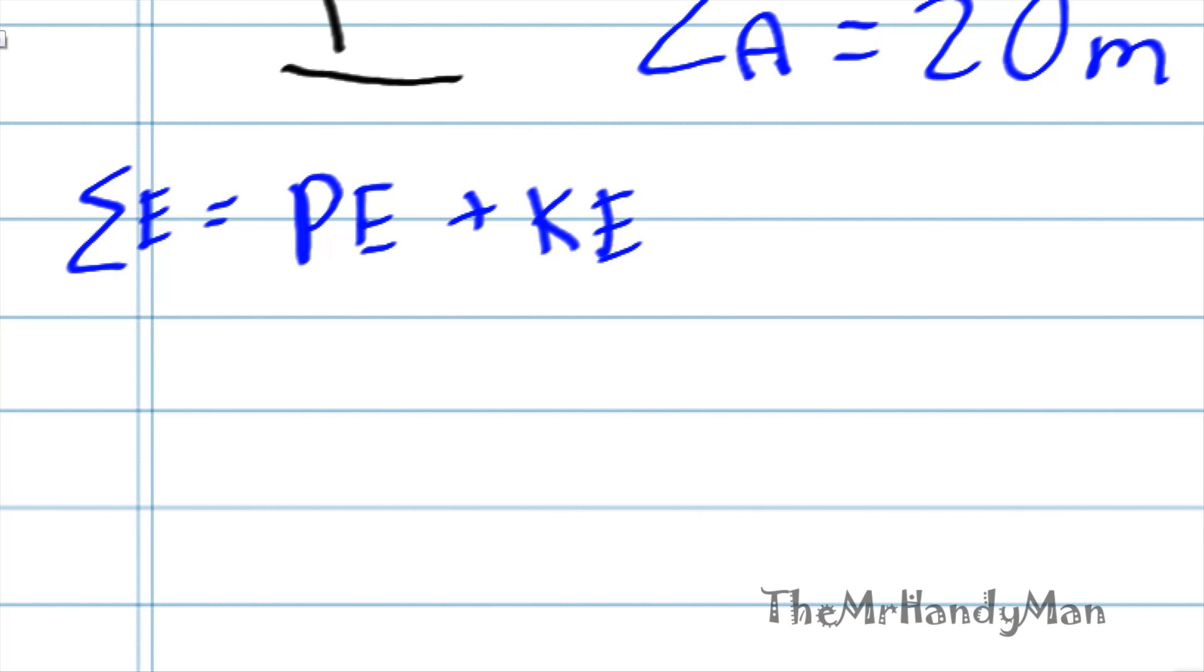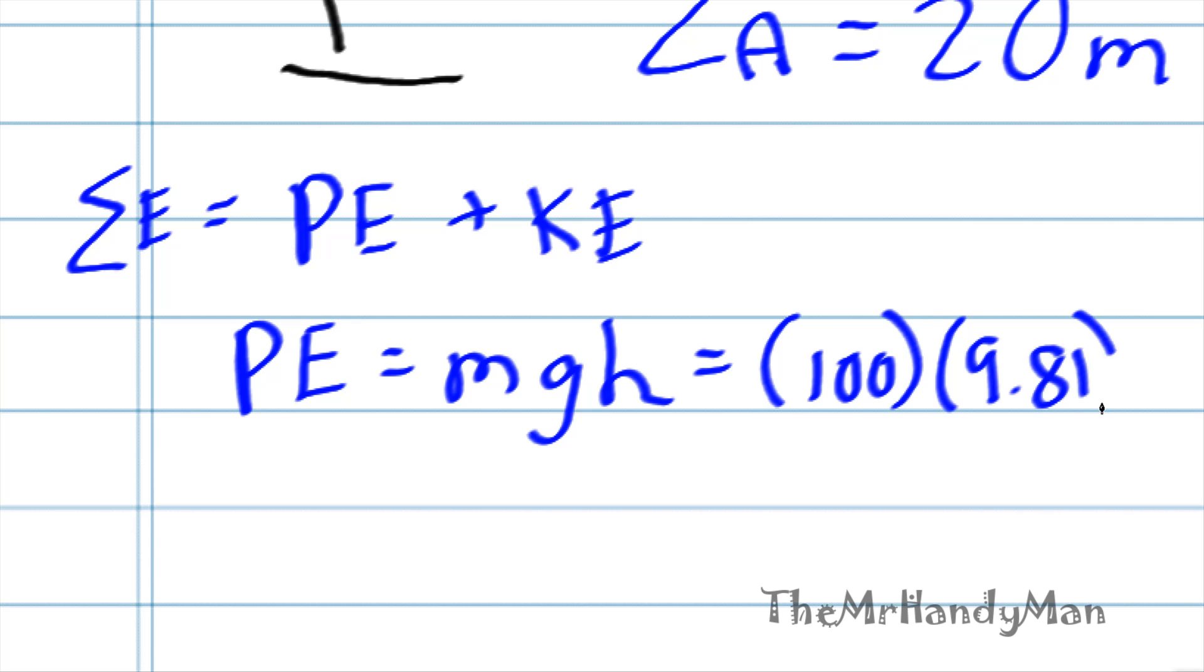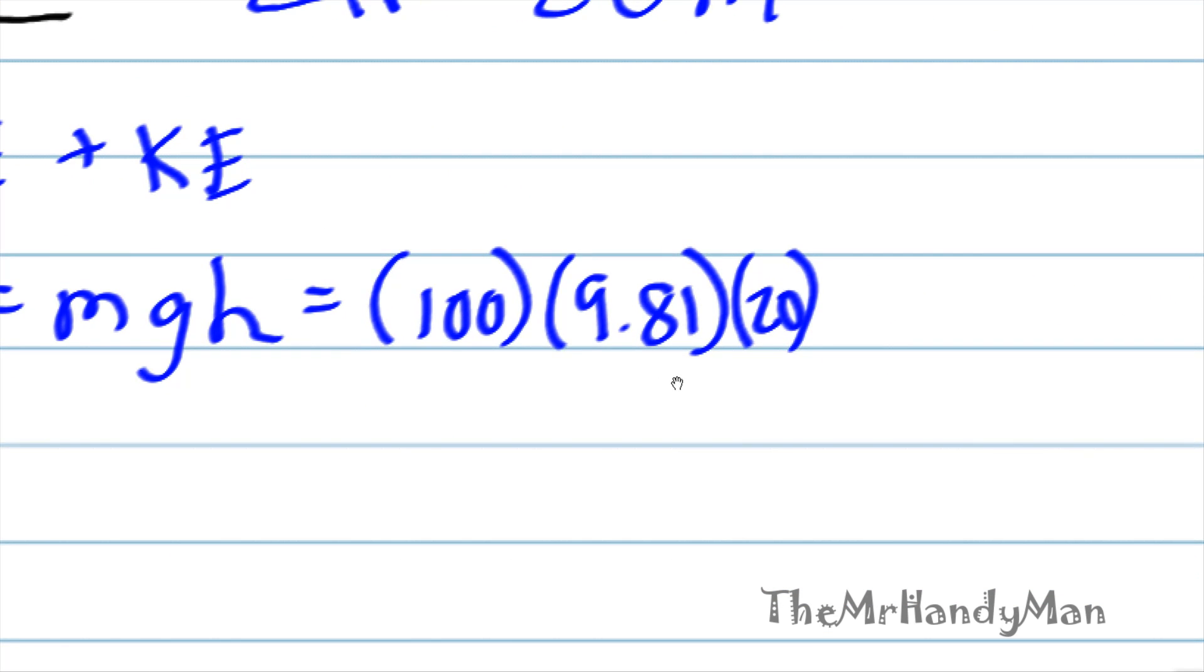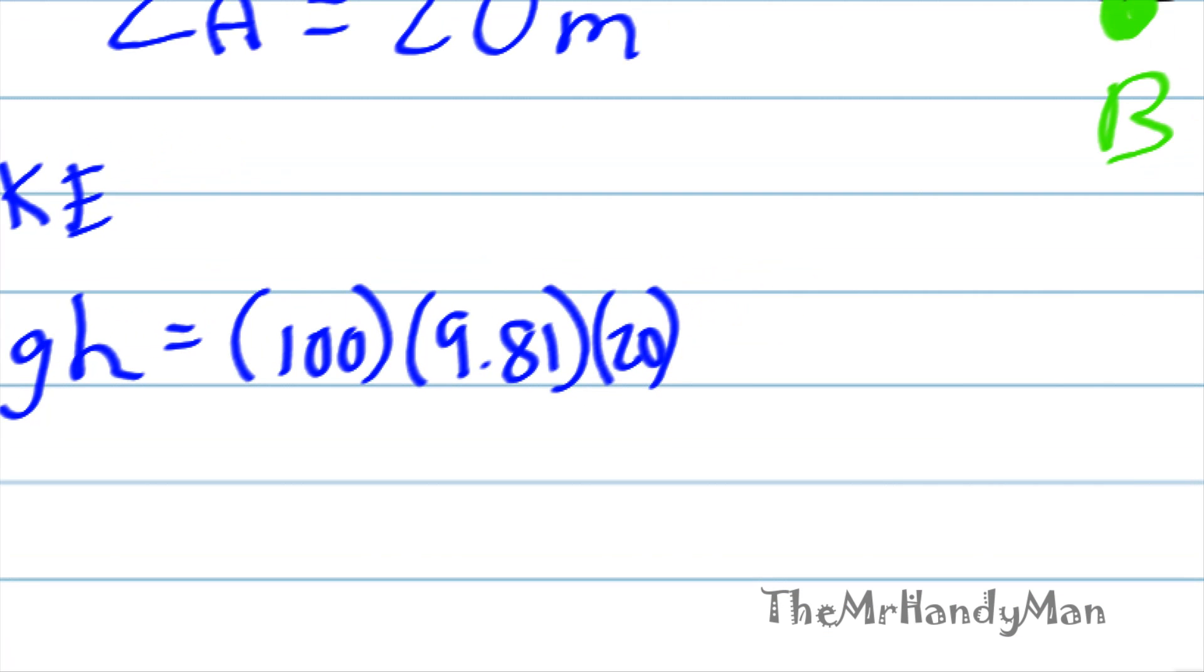So let's work this out. Well the potential energy equals MGH, which is equal to the mass, which is going to be 100 kilograms, G, which is going to equal 9.81 meters per second squared, and H, which is 20. If we work this out, it equals 19,620 joules.